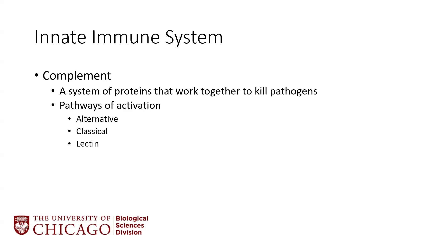Complement is very easy to get overwhelmed with, but the important parts you need to know are these two facts. One, it's just a system of proteins that work together to kill pathogens in a cascade — different proteins activate, activate, activate, until they eventually punch holes in the side of pathogens and kill them. And there are three different ways the complement system can get activated: the alternative pathway, the classical pathway, and the lectin pathway.